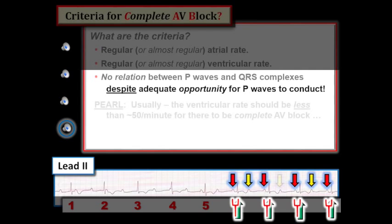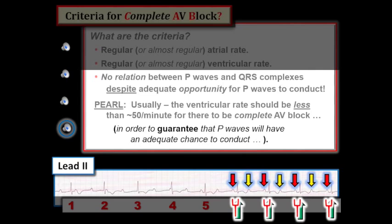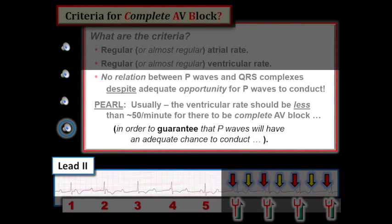Pearl: Usually the ventricular rate should be less than about 50 per minute for the diagnosis of complete AV block to be made. This is because we need a slow enough rate to guarantee that at least most P-waves have a chance to conduct by falling outside of the refractory period, and this criterion is more difficult to satisfy at faster rates. This does not mean there can't be complete AV block when the ventricular rate is above 50 per minute, but it does mean it becomes more difficult to diagnose, and you'll often need a longer period of monitoring. The ventricular escape rate here is right around 50 per minute, which helps explain why P-waves simply did not have an adequate chance to conduct for a short rhythm strip of only 5 beats.